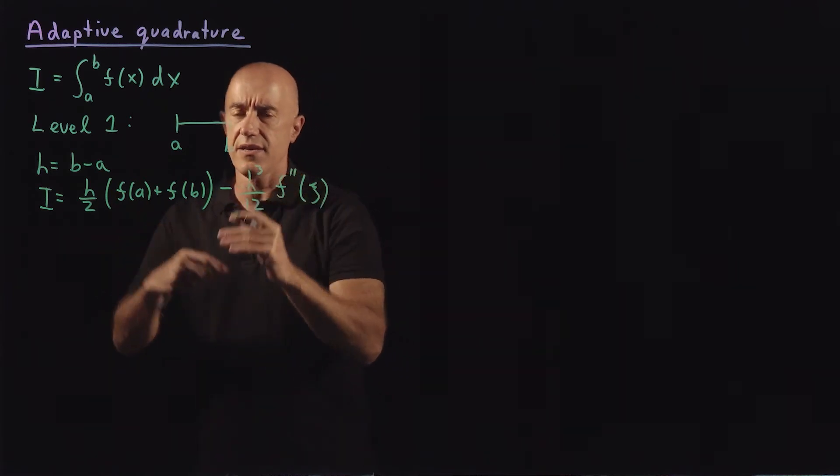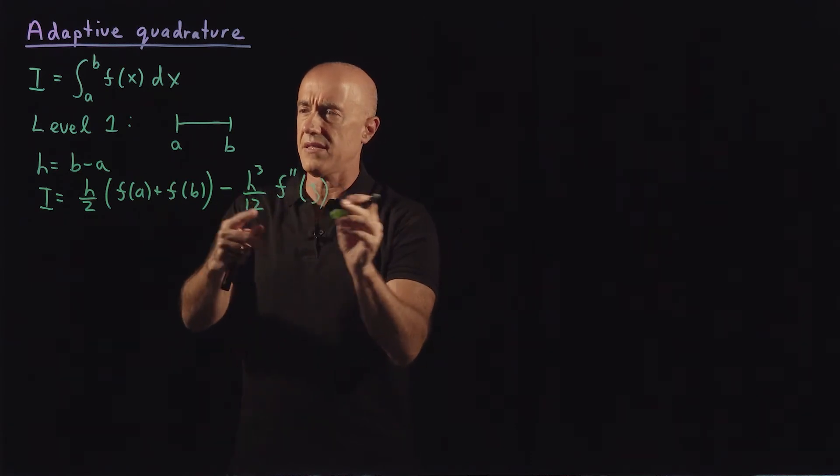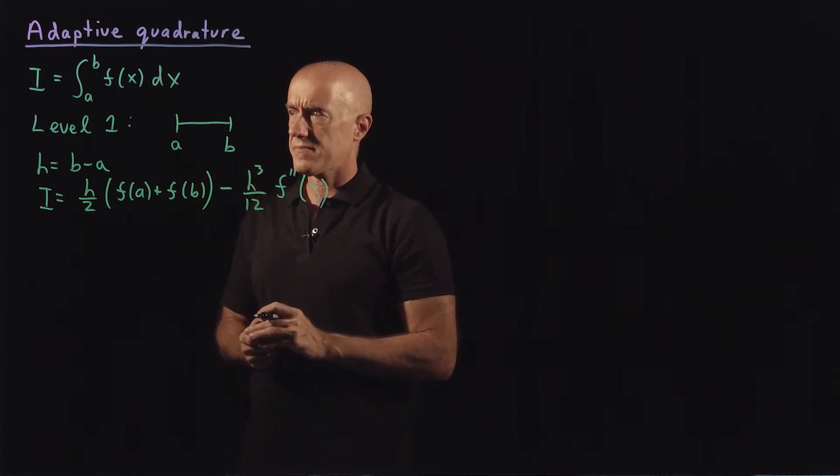The error here will be minus h cubed over 12 times the second derivative at some point in this interval a to b. So let me just call that ξ. This is coming from the Taylor theorem with a remainder. So ξ is some value in a and b.